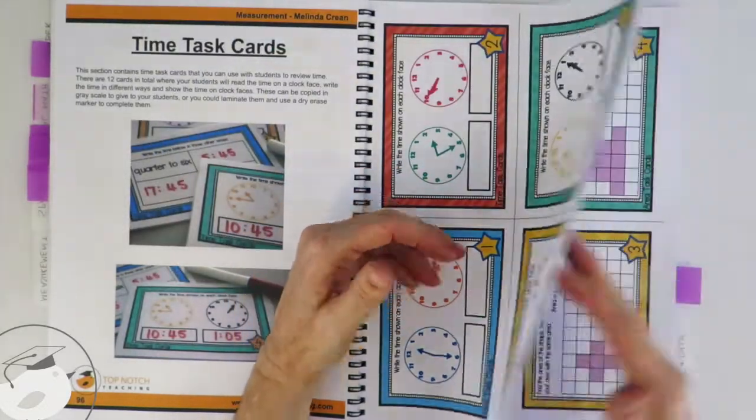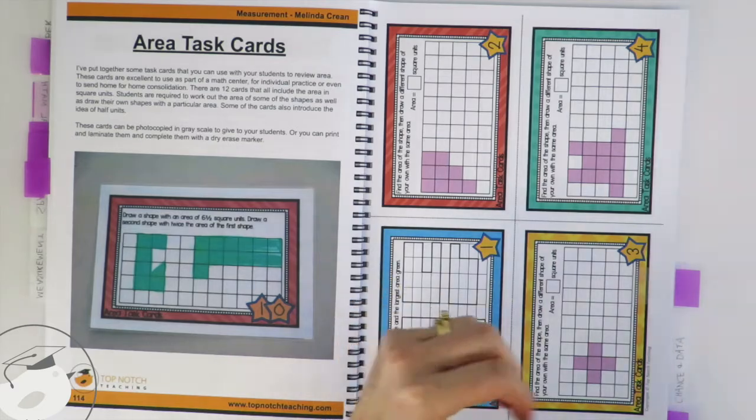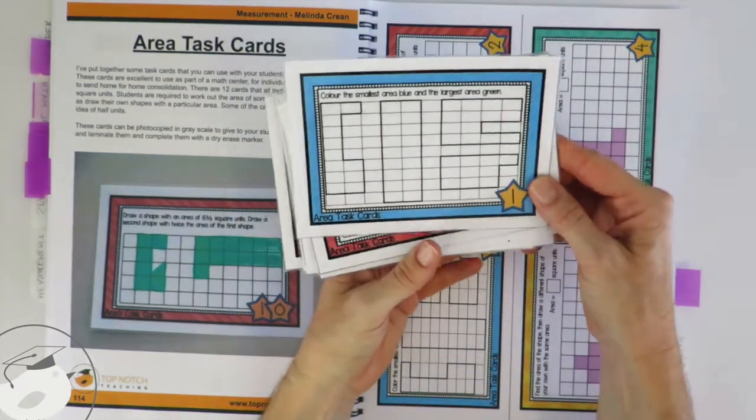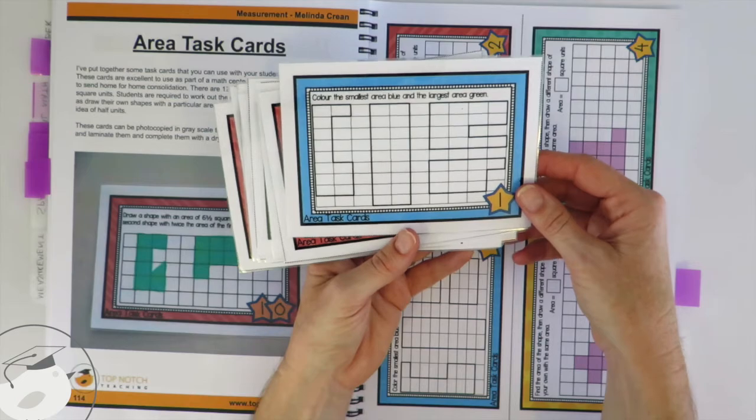And then if we have a look at the next one, we've got area task cards as well. It's a great way to get your students to review area. In this one they're coloring the smallest area blue and the largest area green.